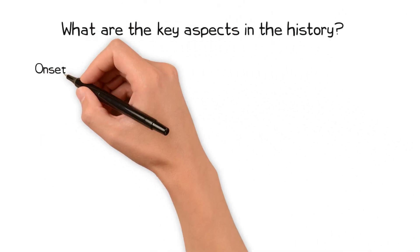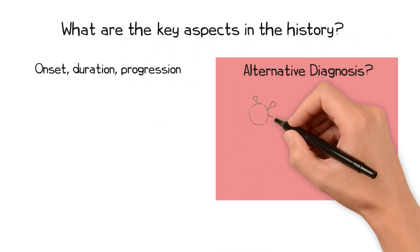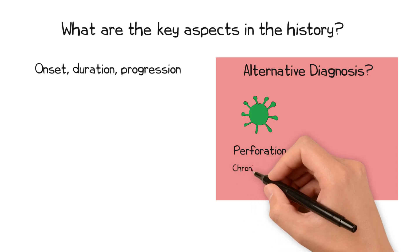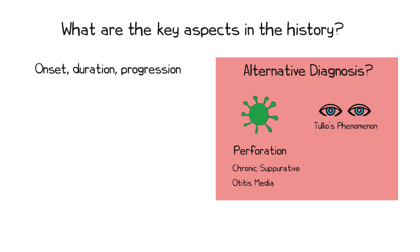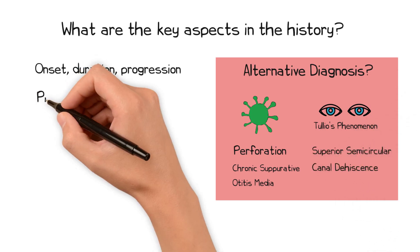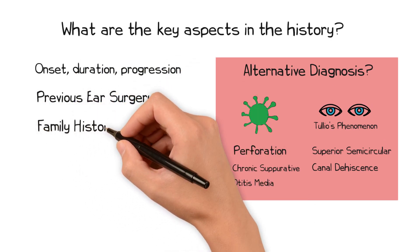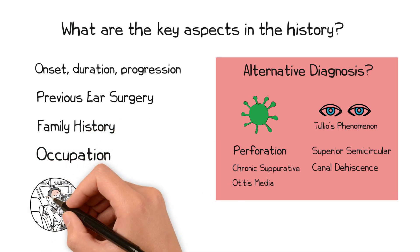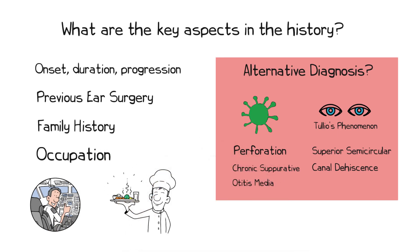Key aspects of the history include the onset, duration, and progression of symptoms, along with otological symptoms that could suggest an alternative diagnosis — such as recurrent infections and otorrhoea, which could suggest a perforation or chronic suppurative otitis media; vertigo, pulsatile tinnitus, or Tullio phenomenon, which could suggest superior semicircular canal dehiscence. Any history of previous ear surgery or family history of hearing loss should also be noted. It is important to determine the patient's occupation to anticipate the impact of hearing loss on their livelihood, along with the potential impact of surgical complications such as vertigo if they work at heights, or taste disturbance if they work in catering.